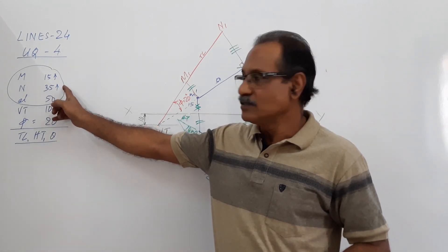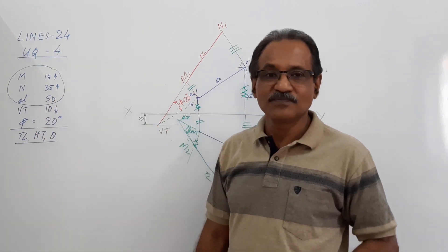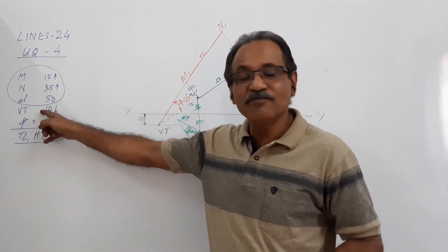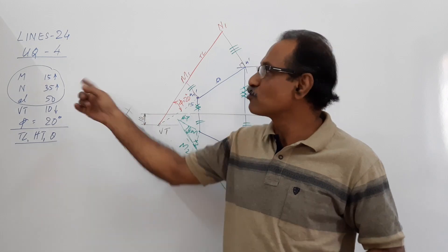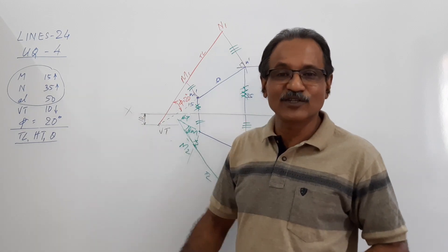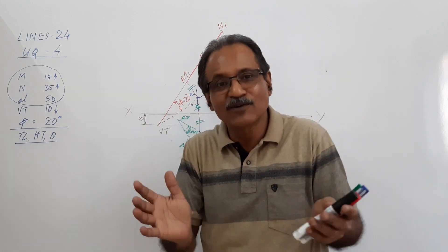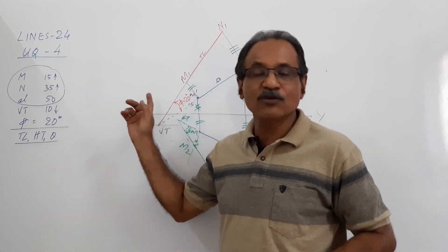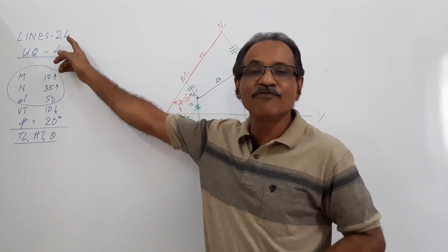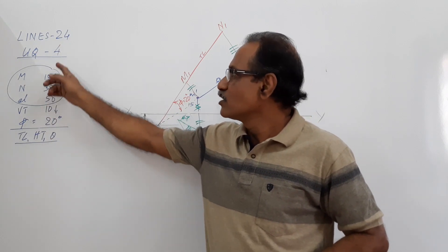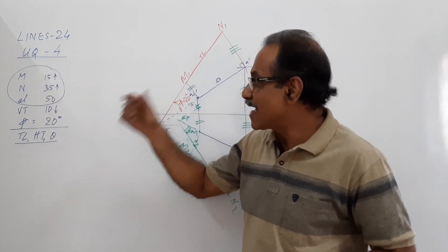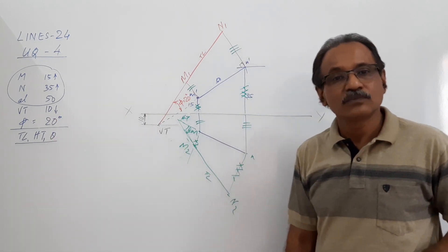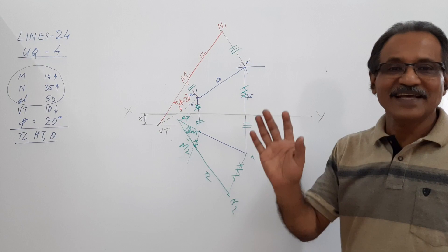If VT of a line lies on elevation, its plan has to cross XY. It's a very important question. So many questions have been framed on this concept, on this method. When you read the question, check: if the elevation data is given, VT and phi must be given. If the plan data is given, theta and HT must be given. We will do a question in that category, one out of the eight probable questions with the same arguments. I will do another question, Lines-25, university question number 5, with the plan and HT and theta given. Okay, thank you.